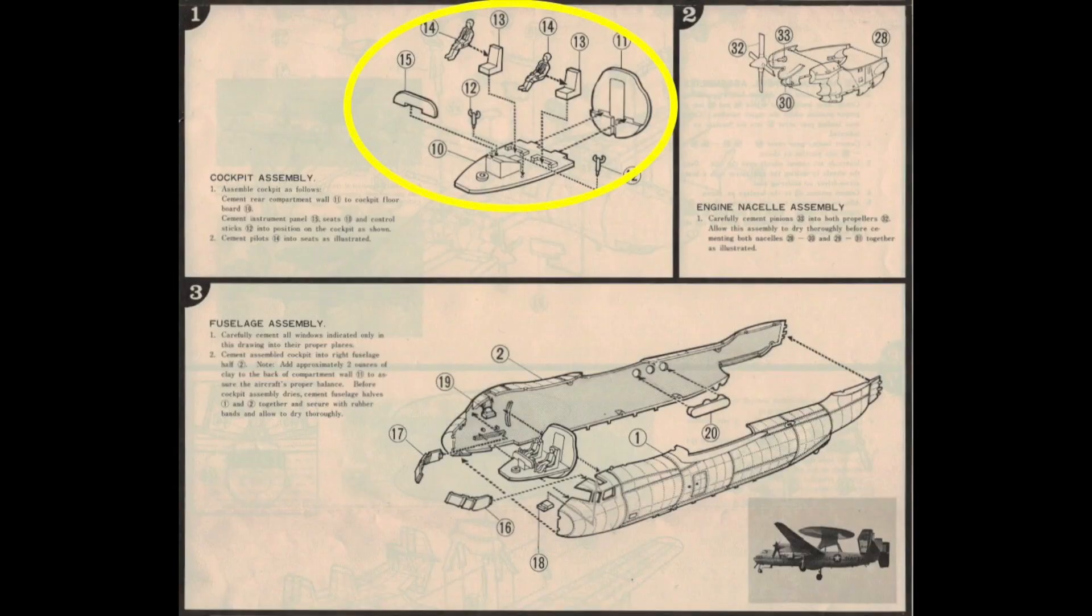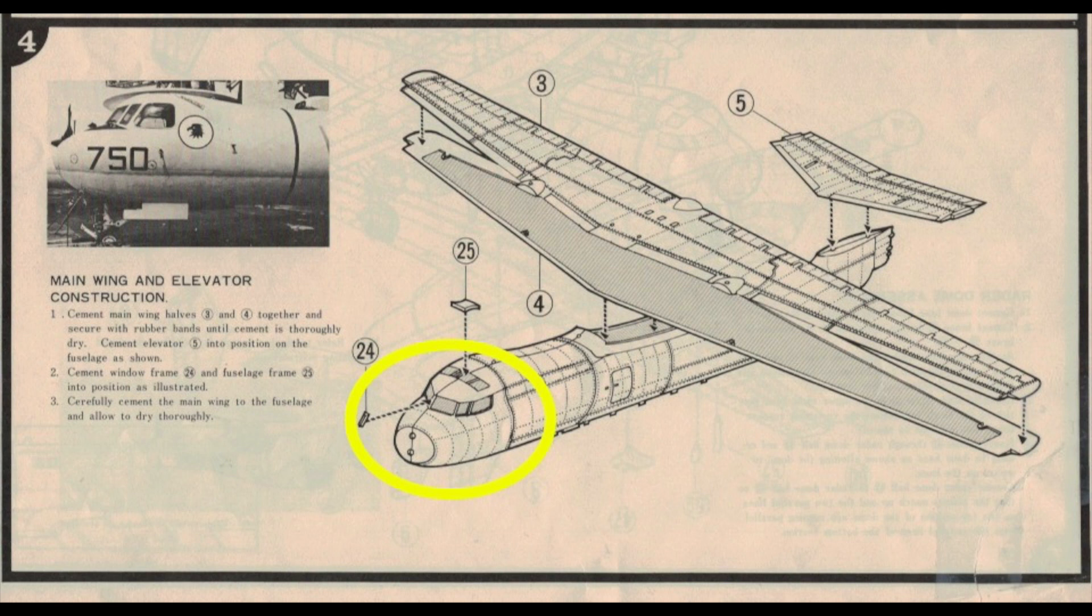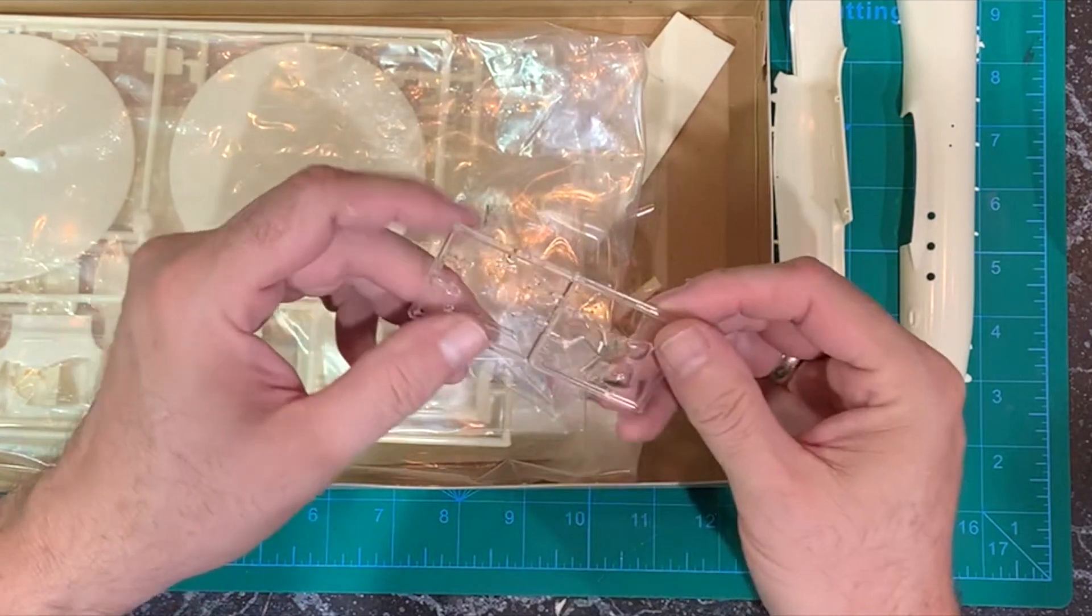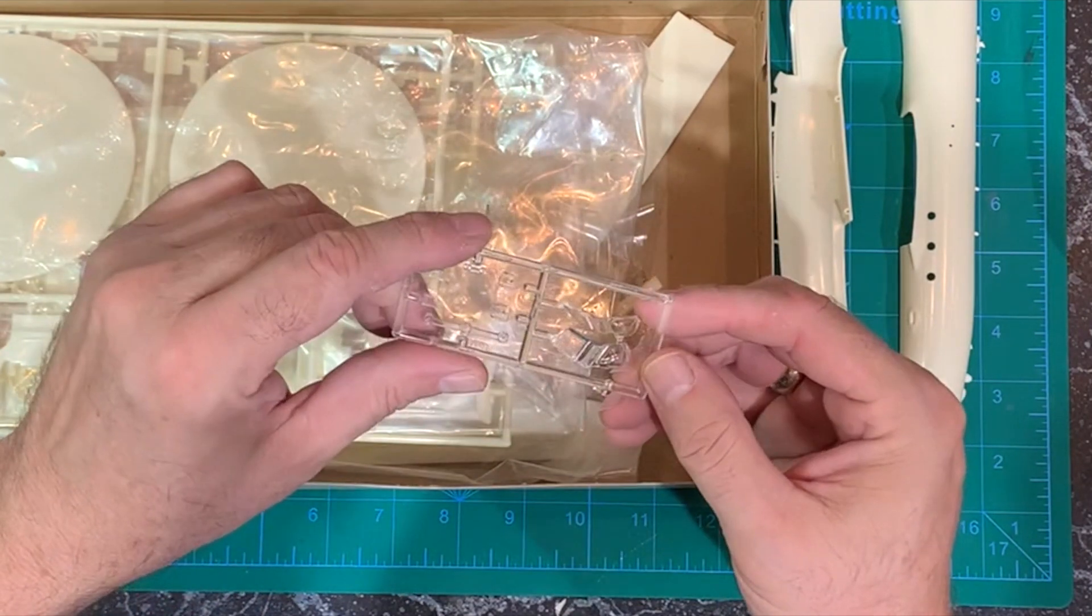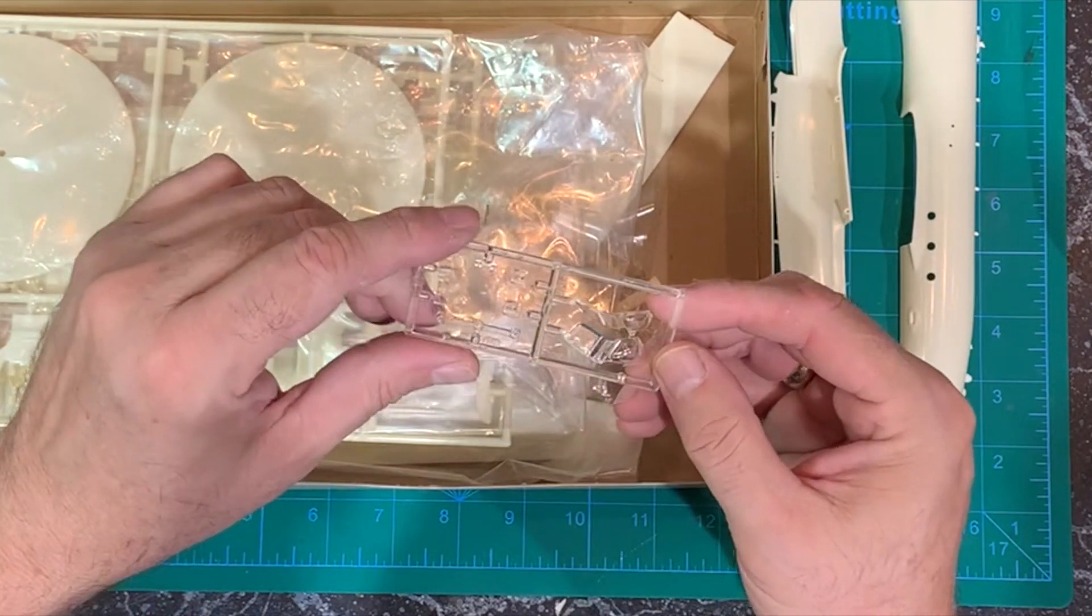The cockpit is very basic, so I want to improve it as best I can. While it's enclosed and not as visible through a fighter canopy, there are windows all around and above it. And while the windows aren't the clearest, the general outlines and perhaps blurry details will be visible.